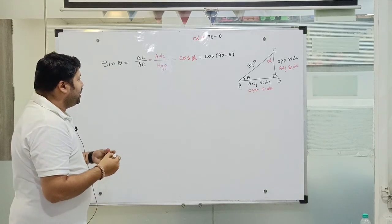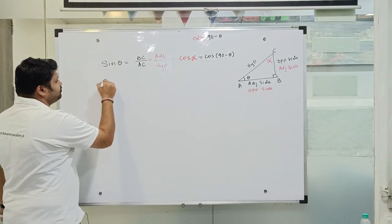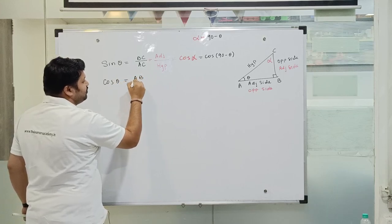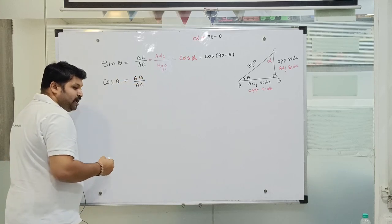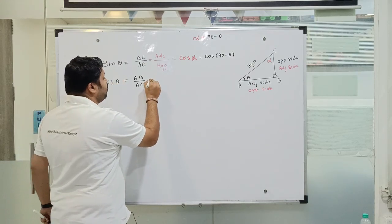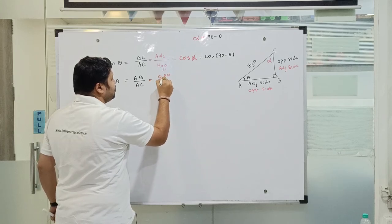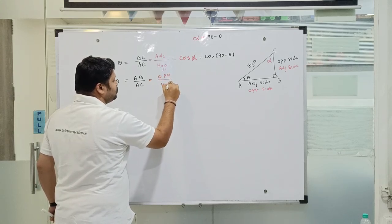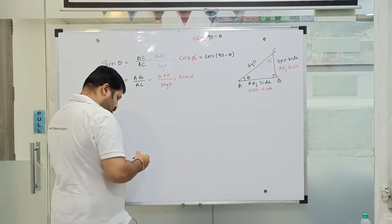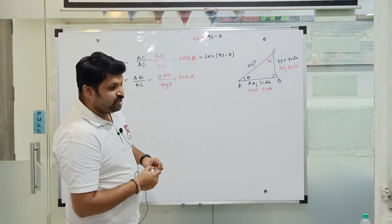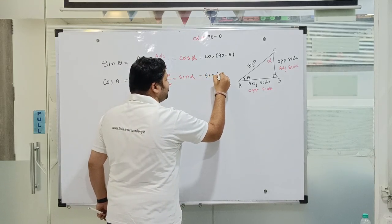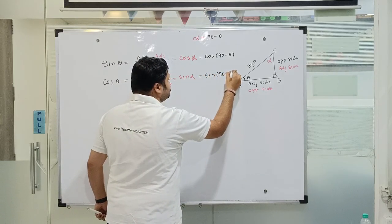Similarly, cos theta would be AB upon AC. But with respect to alpha, it is the opposite side upon hypotenuse, so that would be sine alpha, or we can say it is sine of 90 minus theta.